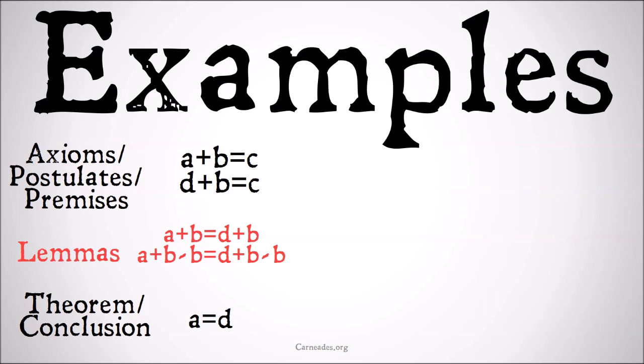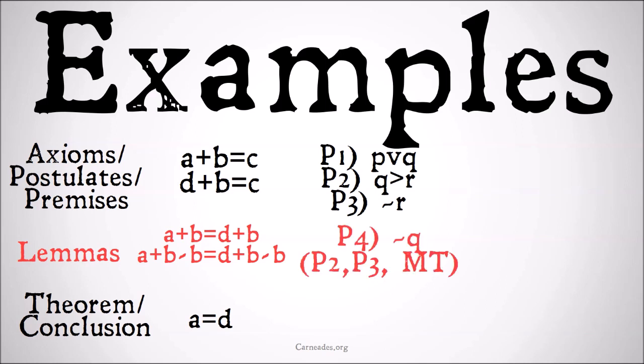The point of those lemmas is to be the intermediate steps — not something we assumed, and not what we were trying to prove at the end. They were the intermediate premises we worked through to get to the conclusion. In something that looks more like logic: Premise 1, p or q; Premise 2, q implies r; Premise 3, not r. We can have a lemma — an intermediate step — Premise 4: not q, from Premise 2 and Premise 3 by modus tollens.